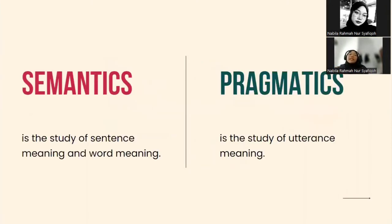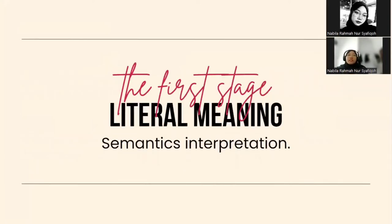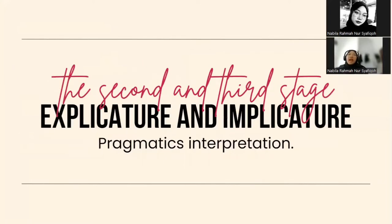Semantics is the study of sentence meaning and word meaning, while pragmatics is the study of utterance meaning. The first stage is literal meaning, which is semantics interpretation, and the second and third are explicature and implicature, which is pragmatics interpretation.